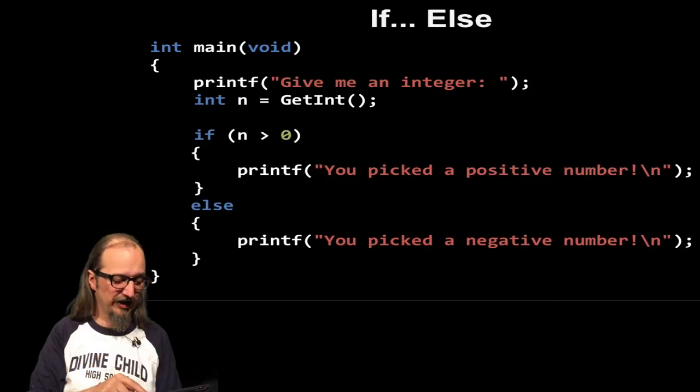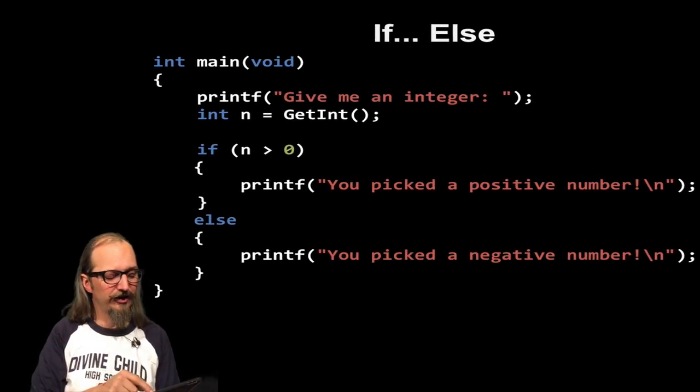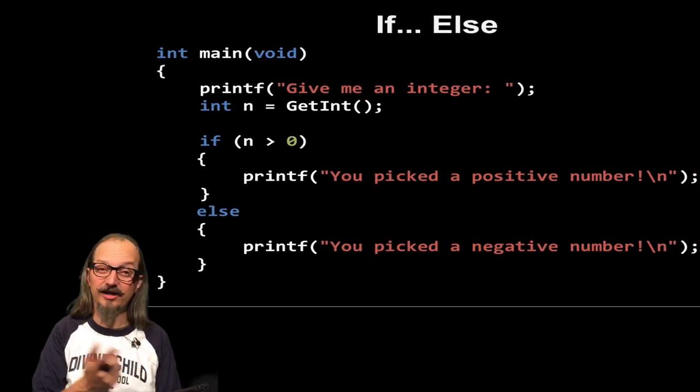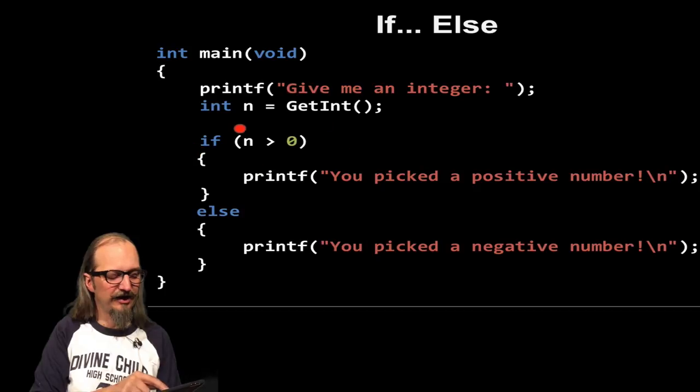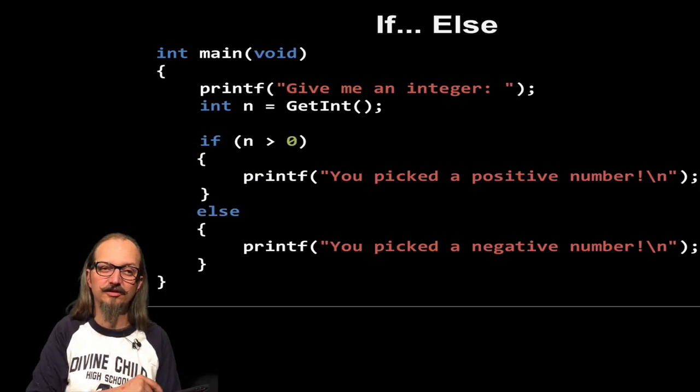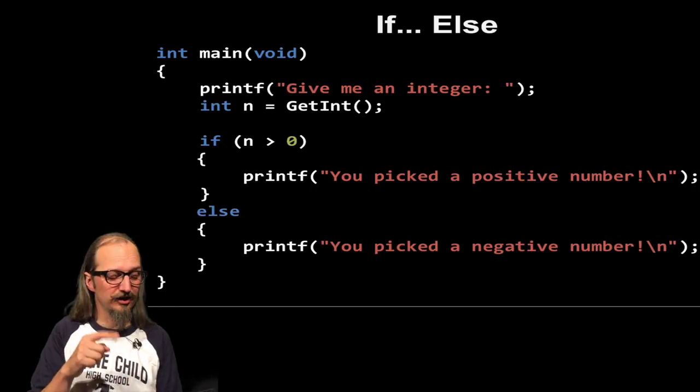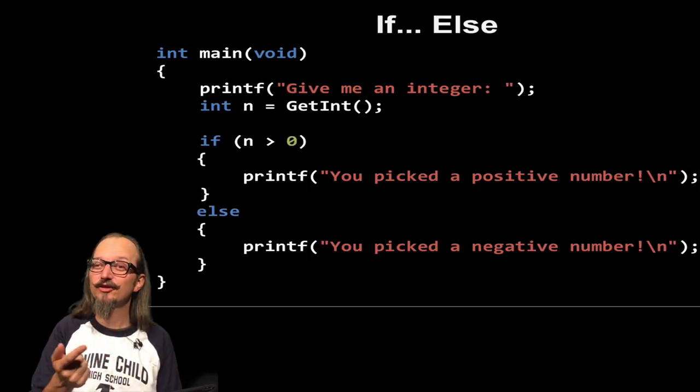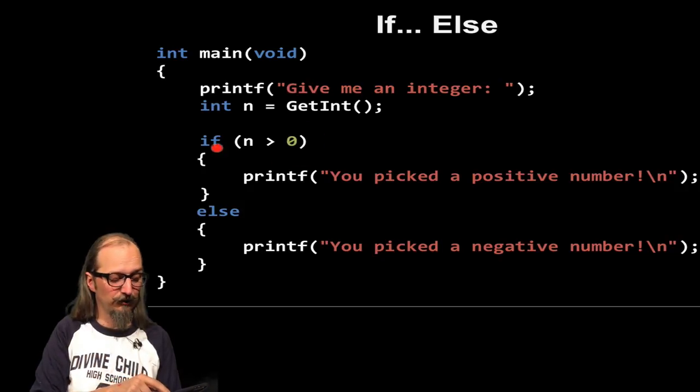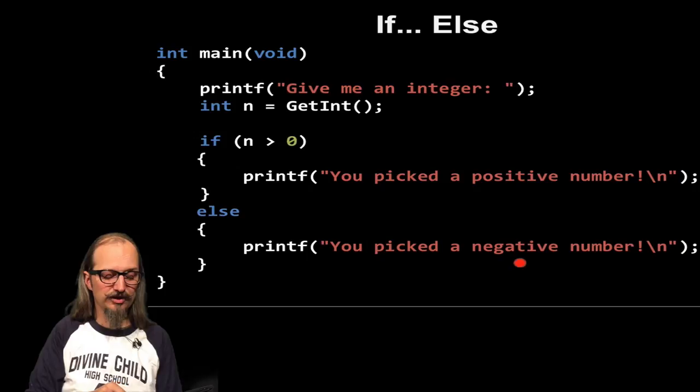The other thing you can do is you can string things together with our else. So what we have here is give me an integer. If n is greater than zero, we might say you picked a positive number. So if this statement is true, we're going to do what's in the curly braces after the if statement. We can add an else and say, if this is not true, we're going to skip this and we're going to go down to our else and we're going to print this instead. So if the user entered a number that was greater than zero, it would say you picked a positive number. If they entered a negative number, this statement would not be true and we would jump down to here and then we would say you picked a negative number.